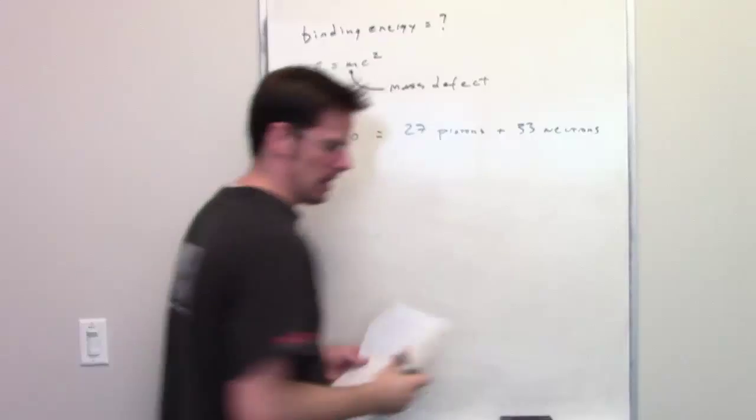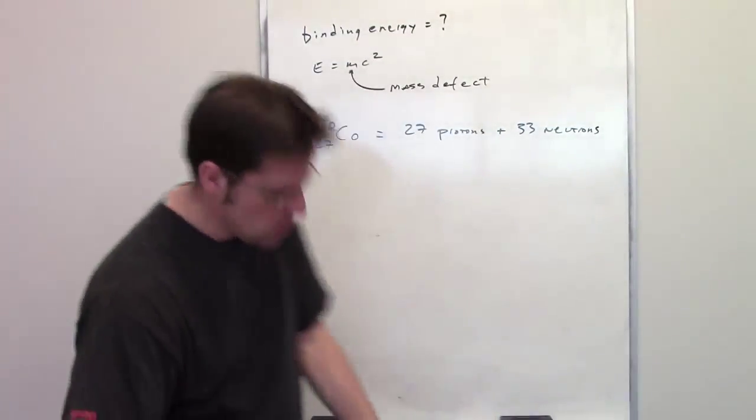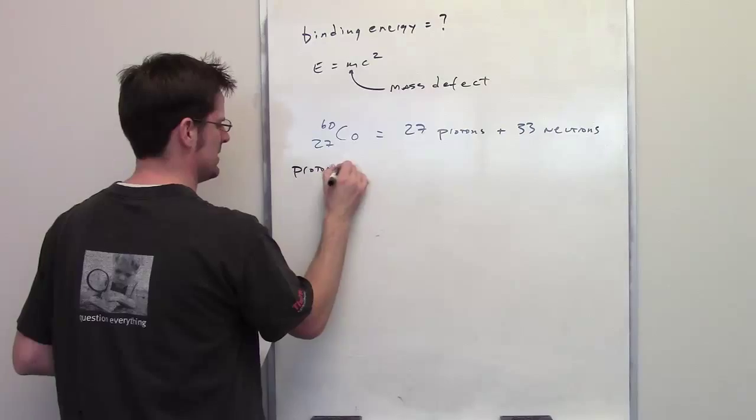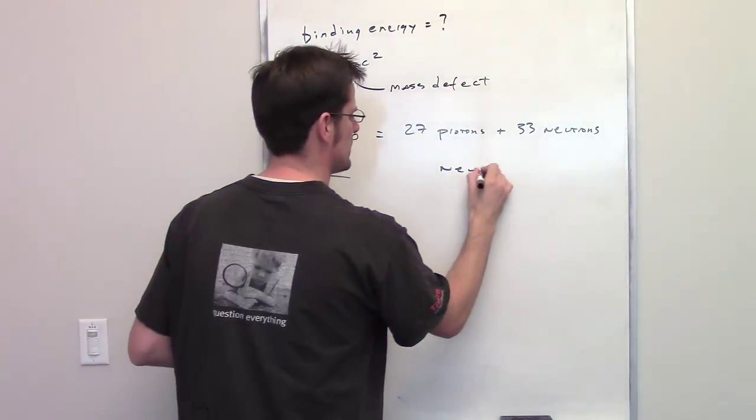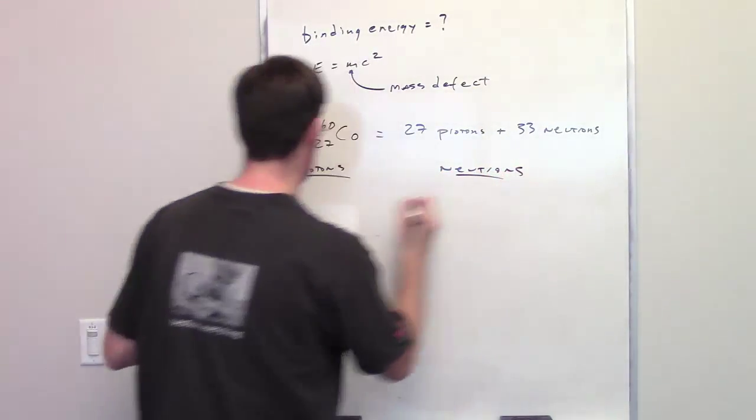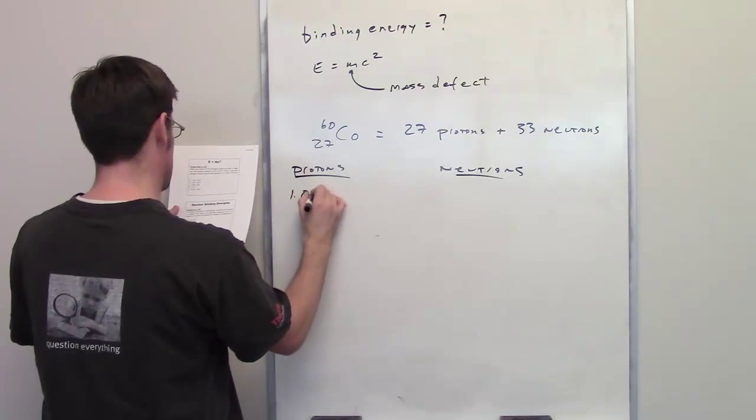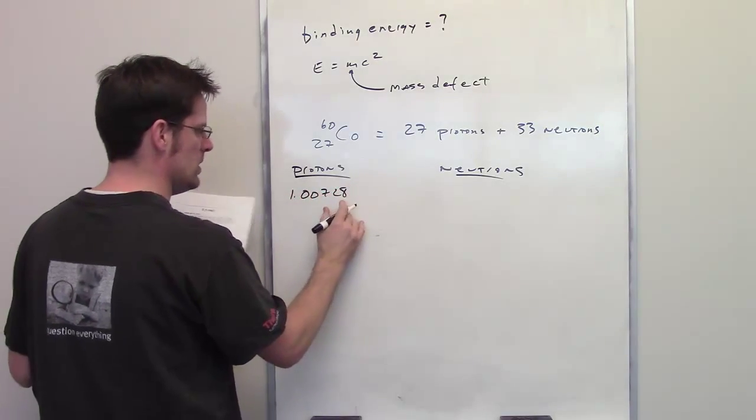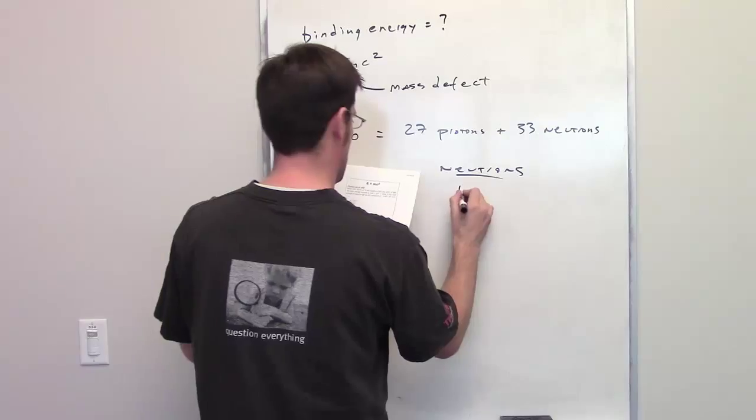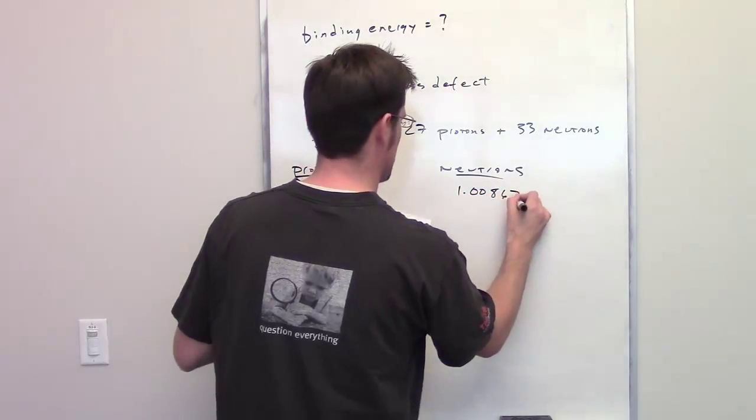It tells me in the problem that a proton weighs, so I'm going to write down protons and neutrons. It tells me that a proton weighs 1.00728 amu, and a neutron weighs 1.00867 amu.